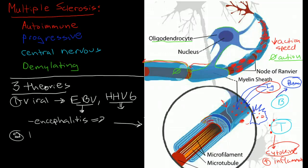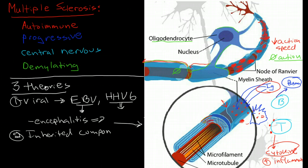Another theory is that there is an inherited component. That there is a defect in the myelin protein that is central in the disease pathology.